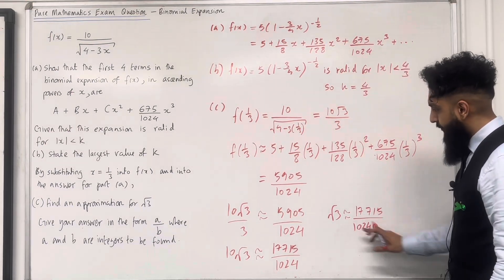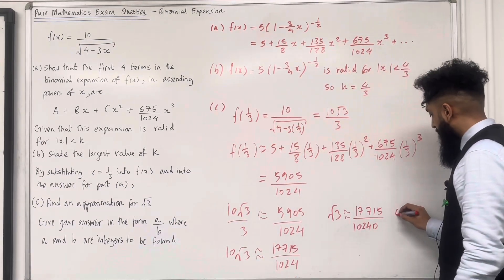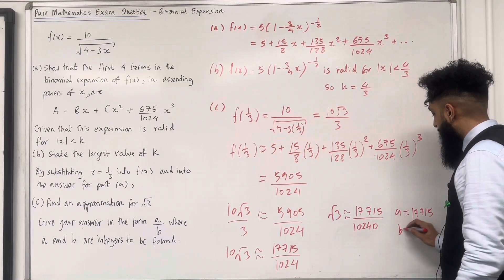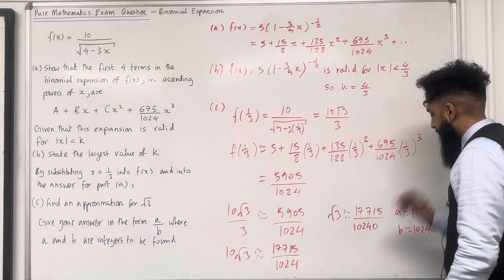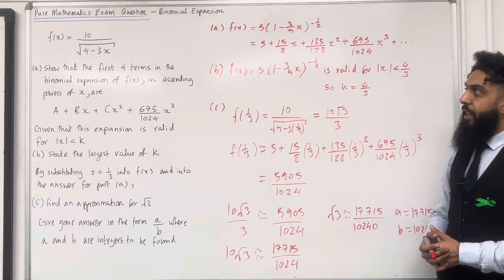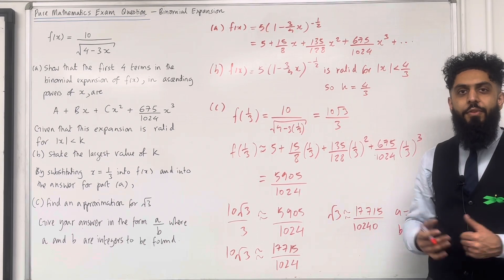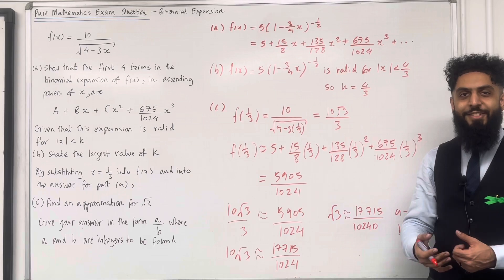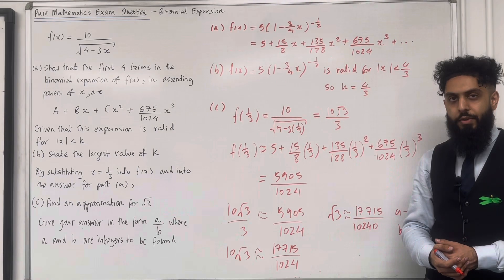This is in the form A over B, so A equals 17715 and B equals 10240. That completes this exam question and the teaching video on Pure Mathematics Binomial Expansion. If you found the video useful please subscribe, leave a like, leave a comment, and turn on your notification bell so that you receive notifications every time I post a new teaching video. Thank you.